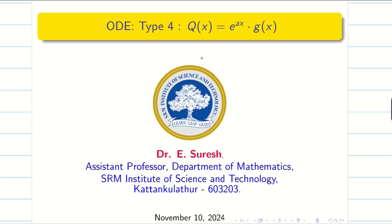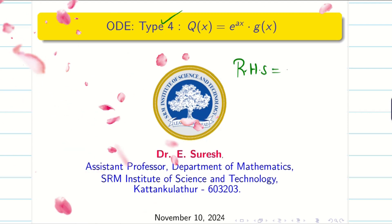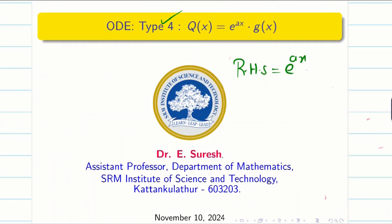Dear students, welcome to the problem solving session on ODE Type 4. My right hand side is going to be e^(ax) into g(x). We have learned Type 1, Type 2, and Type 3. Type 1 is simply e^(ax). Type 2 is sine or cosine. Type 3 is polynomial.